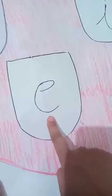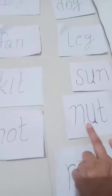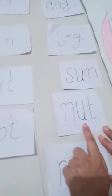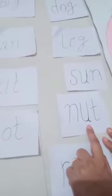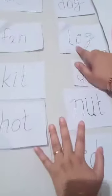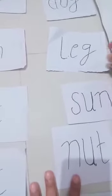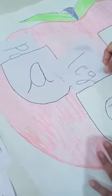Now the next vowel sound is E. Let's find words with the E sound. Nut — is it an E sound? No. Like 'leg' — yes, it is an E sound! So children, we will put the word inside the pocket.